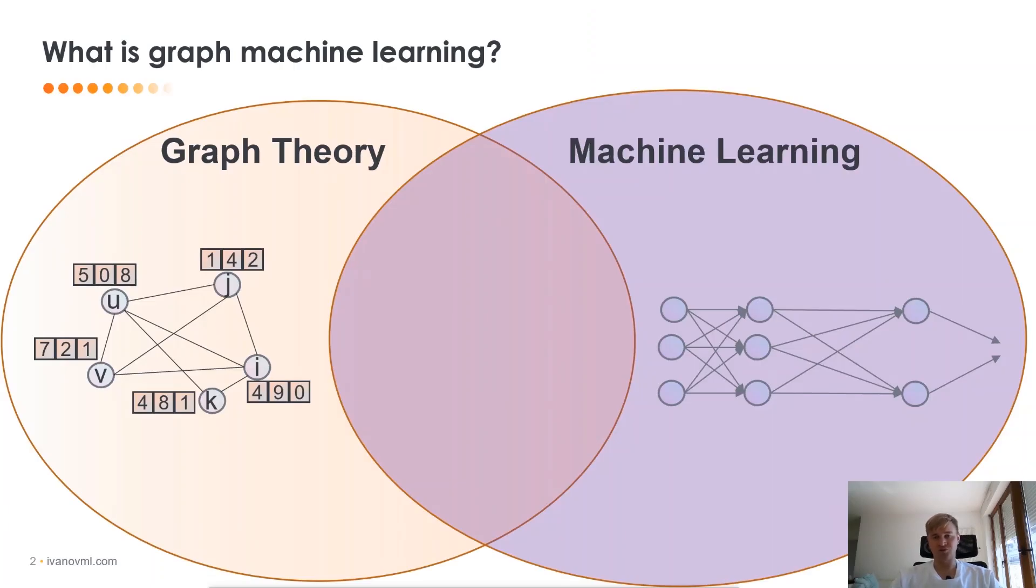So what is Graph Machine Learning? Graph Machine Learning is the science between graph theory and machine learning, and it has a lot of intersection.